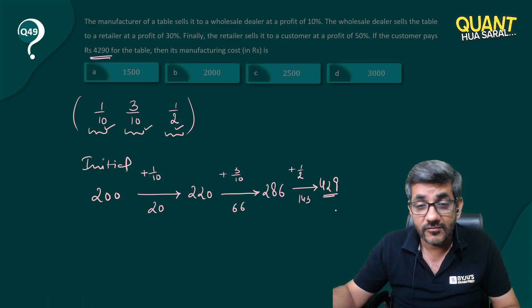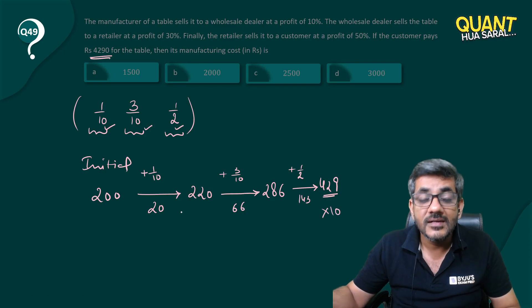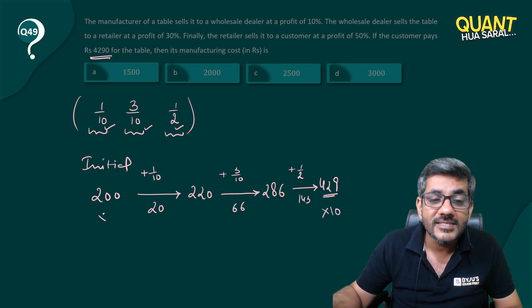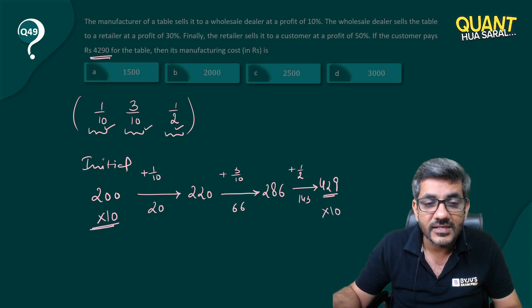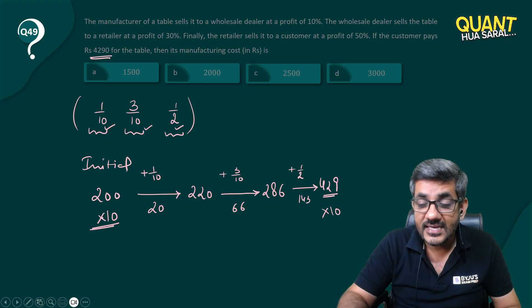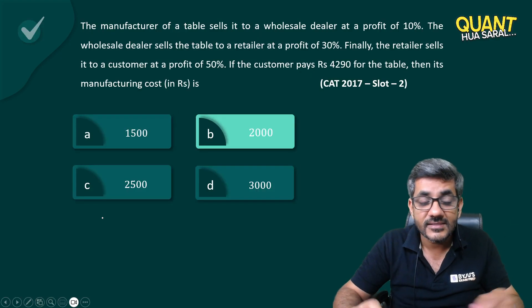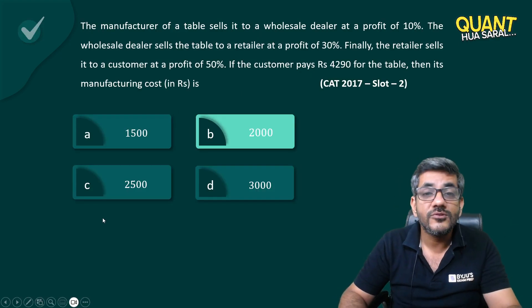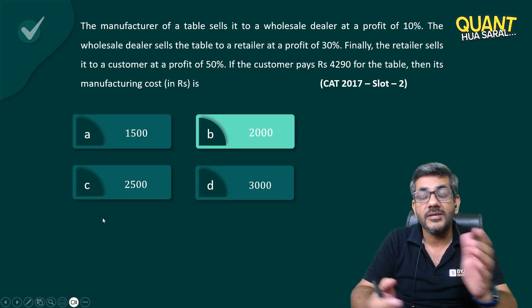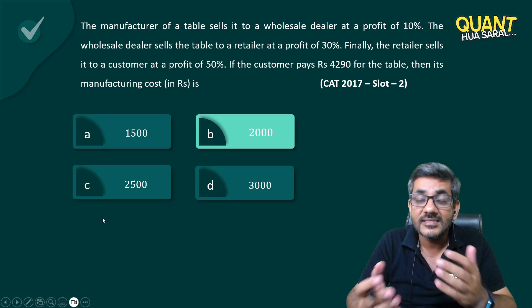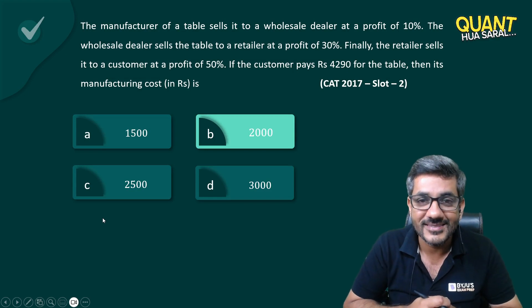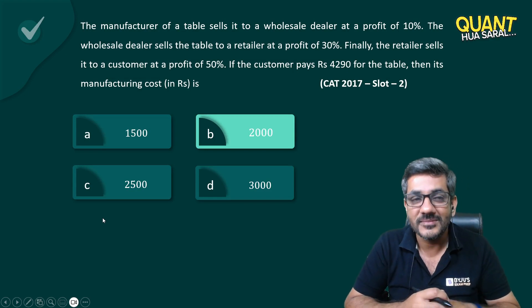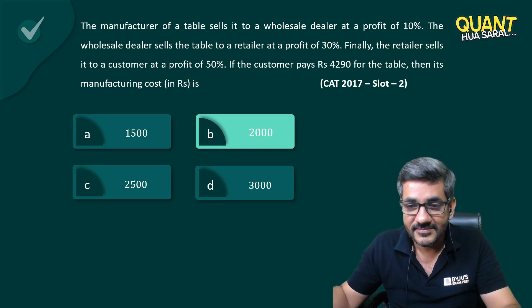So if the initial price is 200, the final selling price is 429. But the customer is paying 4290, which is exactly 10 times of 429. That means the initial manufacturing cost is also 10 times of 200, which gives us 2000 — option B. That's the right way of solving these questions.